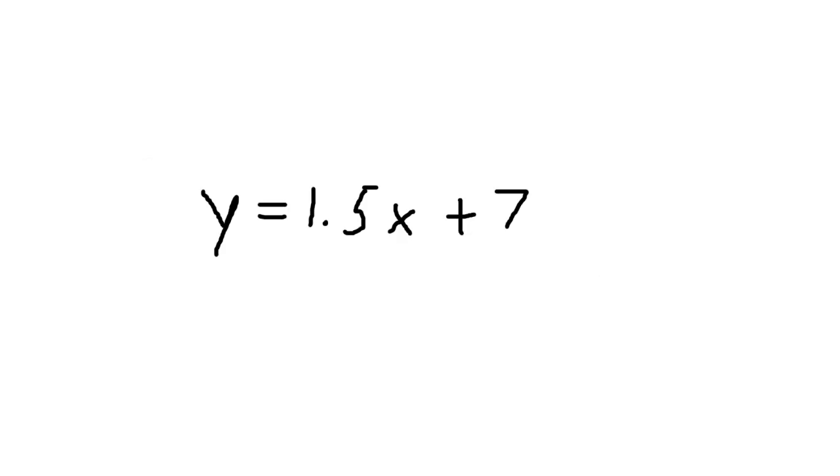For example, if every candy bar costs $1.50 and you pay an additional flat rate of $7 to ship any amount of candy bars to you, after your existential crisis on the ridiculous rate of inflation, you can then construct a linear equation that looks like this: y equals 1.5x plus 7, where x is the number of candy bars you order, and y is the total cost in dollars.